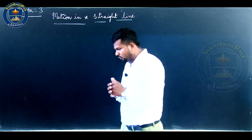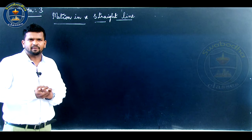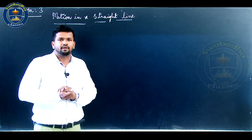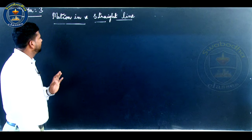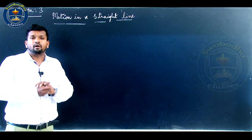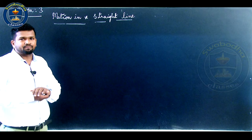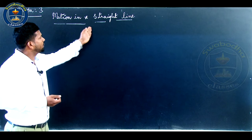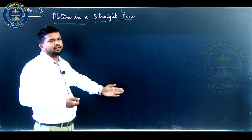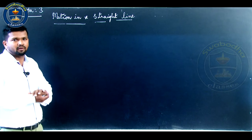A natural question may arise: what is motion? Motion is nothing but the change in position of an object with time. The question then arises: how does the position change with time? In this chapter, we are going to describe motion in a straight line — motion taking place along a straight line.